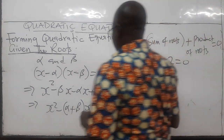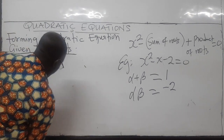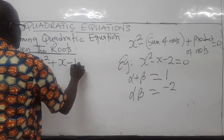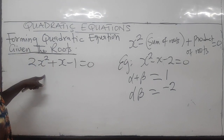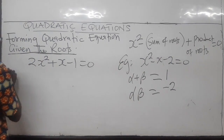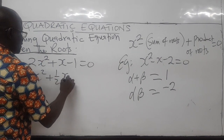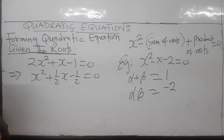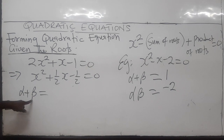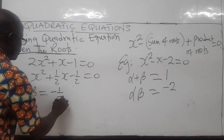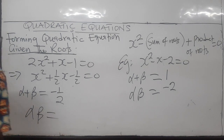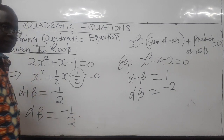In the same way, suppose you are given the quadratic equation two X squared plus X minus one is equal to zero. What is the sum and the product of the roots? Well, you divide through by two so that you have it in standard form: X squared plus one-half X minus one-half equals zero. From here, the sum of the roots, alpha plus beta, is negative one-half — minus minus is positive half — and the product of the roots, alpha beta, is negative one-half.